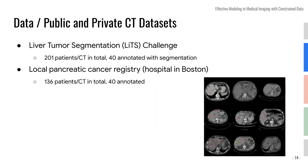The pancreatic cancer registry was actually collected in a hospital in Boston, with around 100 patients. We annotated the body composition segmentation for 40 of them. For the external data, we're using the well-known liver tumor segmentation challenge dataset — the CT images were clear enough to cover the part of the L3 vertebral body that we want, so we annotated those as well.